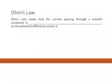Ohm's law states that the current passing through a metallic conductor is directly proportional to the potential difference across it. This means that I is directly proportional to V.